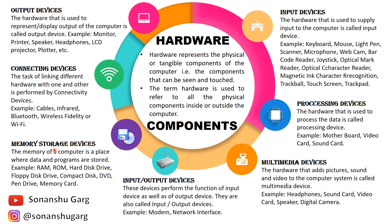Memory Storage Devices. The memory of a computer is a place where data and programs are stored. Memory is a place in the computer where all our data, programs, and sets of instructions are stored. The hardware devices that help us with this are called memory storage devices. Examples: RAM, ROM, hard disk drive, floppy disk drive, compact disk, DVD, pen drive, and memory card. We will see all these in detail.